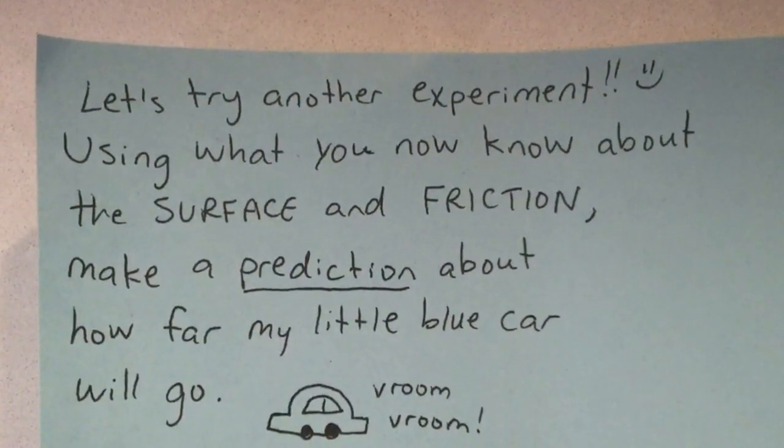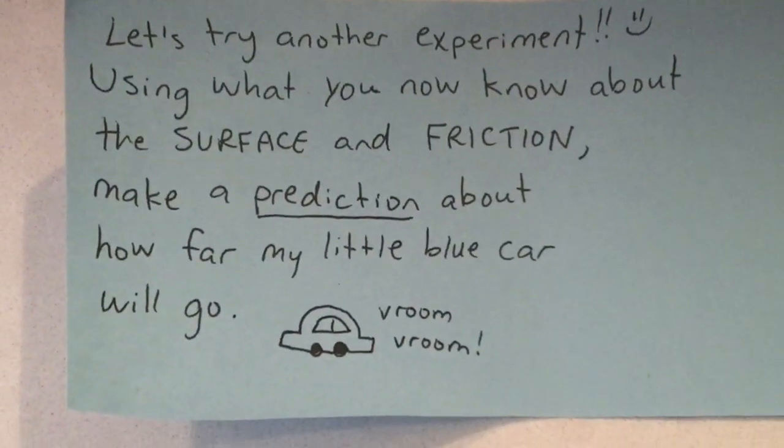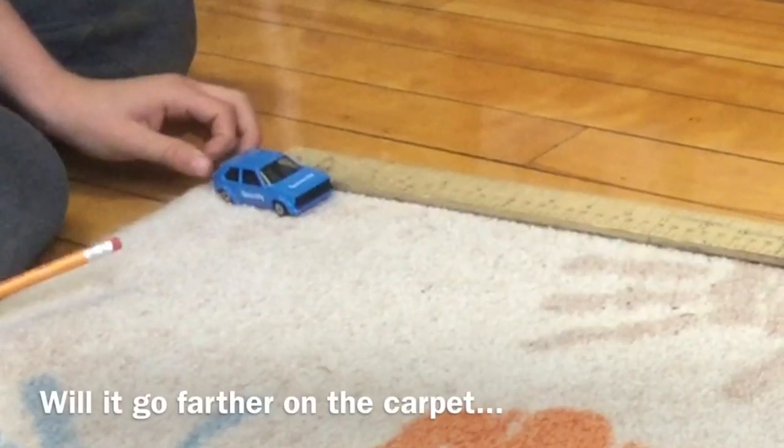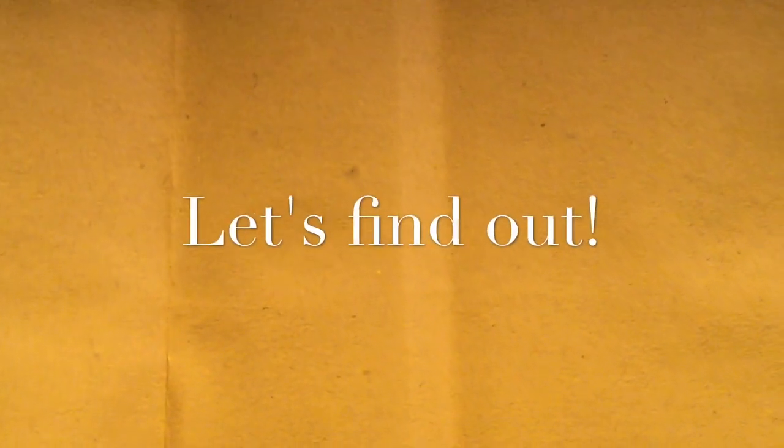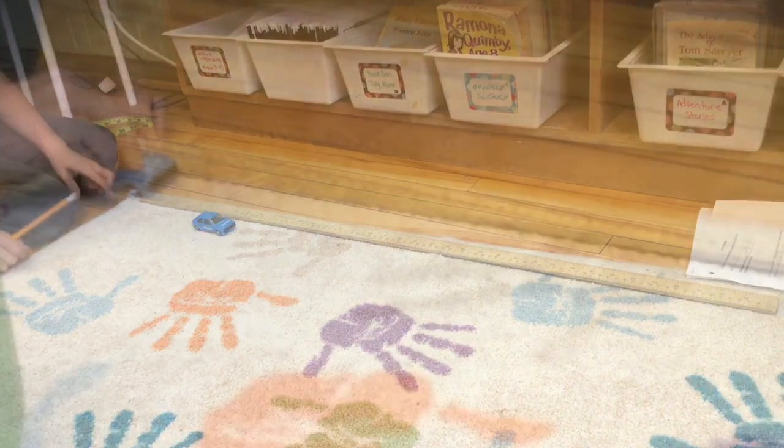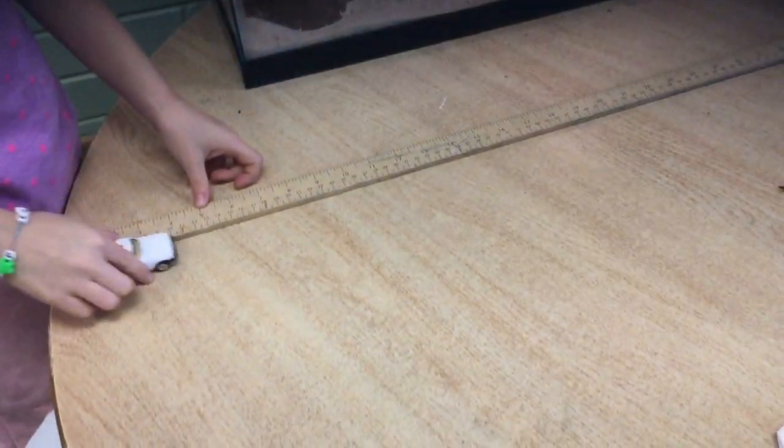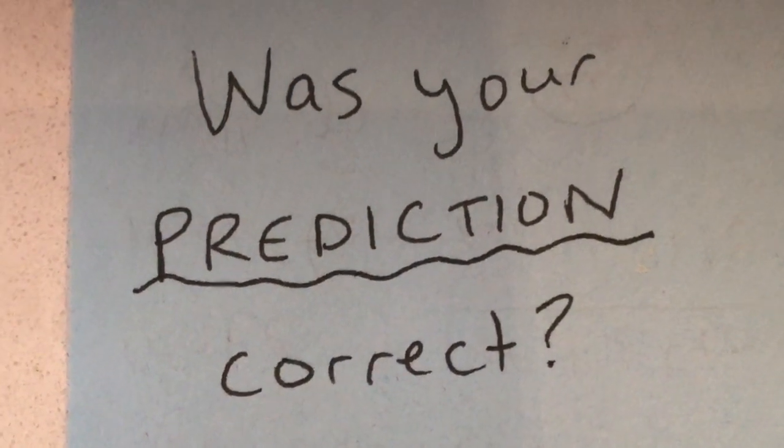Let's try another experiment. Using what you now know about the surface and friction, make a prediction about how far my little blue car will go. Will it go farther on the carpet or on the table? Let's find out! Was your prediction correct?